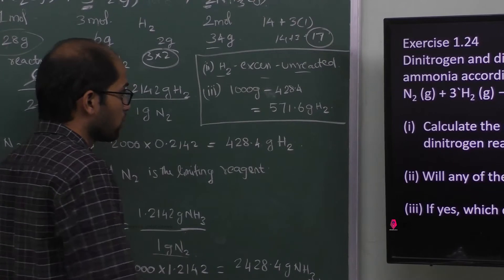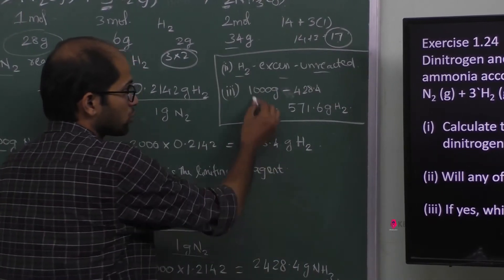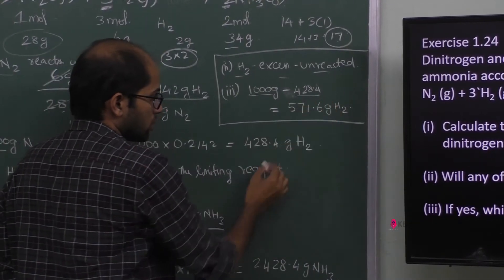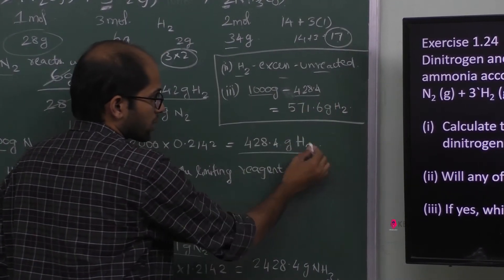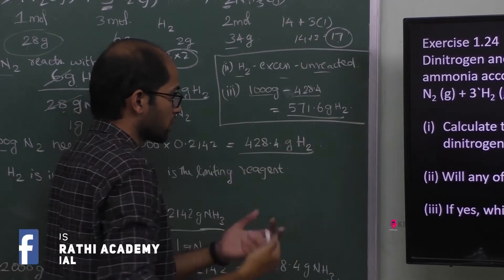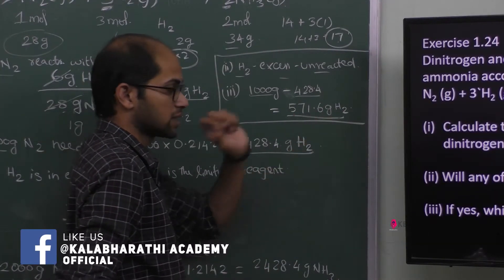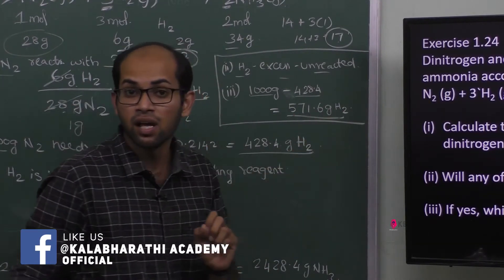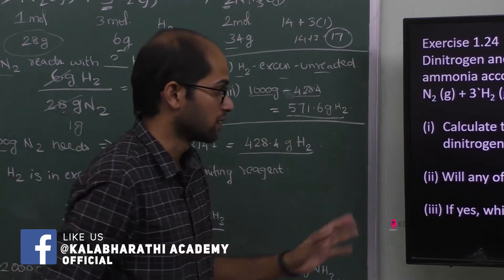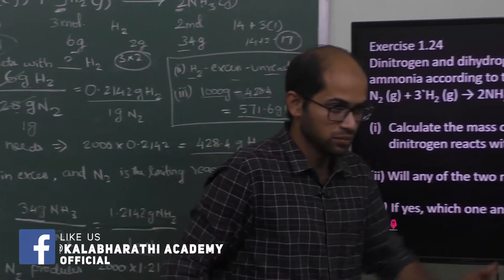Now for the unreacted portion: the total hydrogen available is 1000 grams, and 428.4 grams reacted. So the unreacted hydrogen mass is 1000 − 428.4 = 571.6 grams of hydrogen remains unreacted.